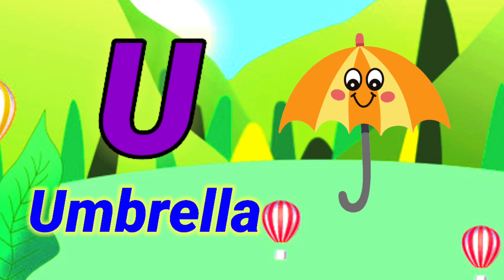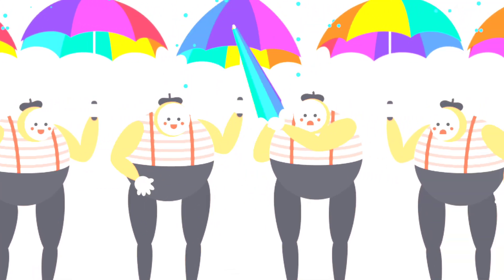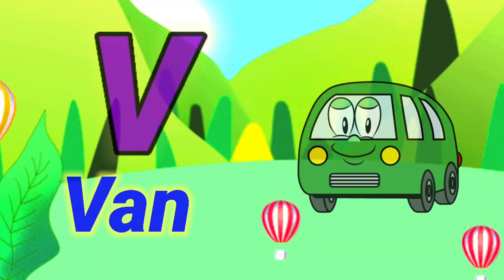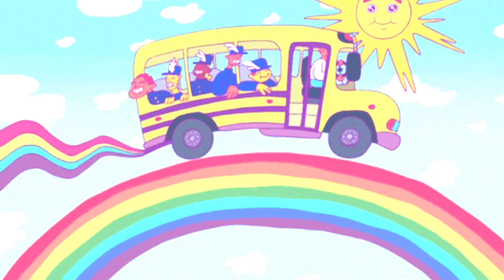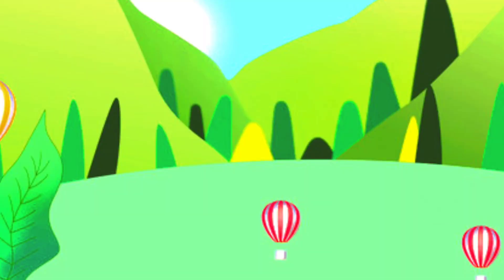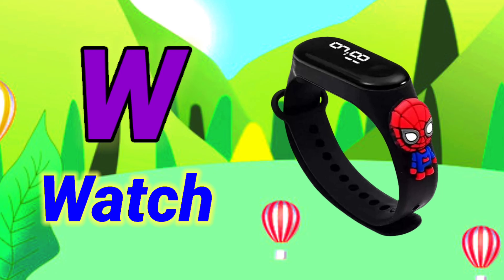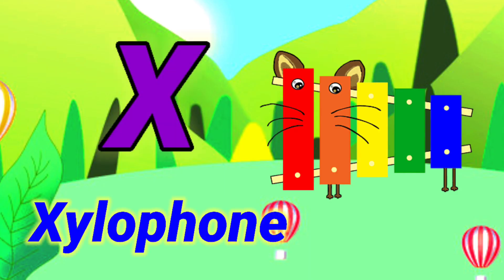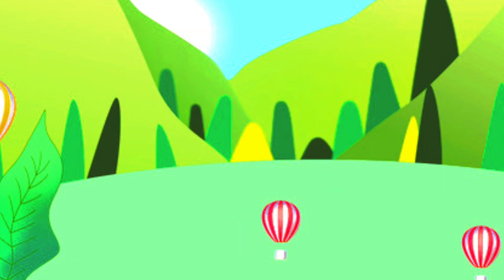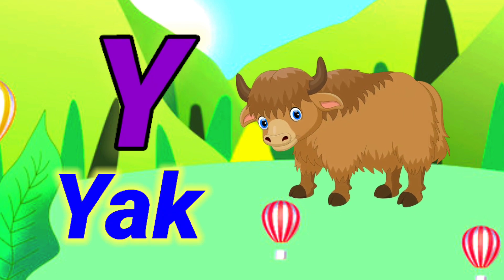U for umbrella, umbrella means chata. V for van, van means motor. W for watch, watch means ghaadi. X for xylophone, xylophone means slaphan.